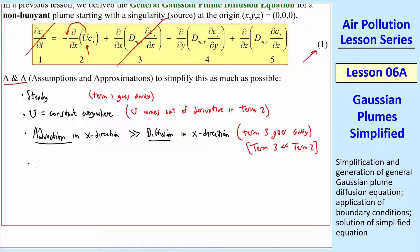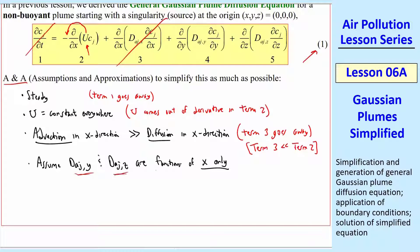We'll make another assumption: the diffusion coefficients D_a,j,y and D_a,j,z are functions of x only. Both remaining diffusion coefficients depend on x, but they do not depend on y or z. So when we look at term 4, which is a derivative with respect to y, D_a,j is only a function of x and can come out of the derivative. Similarly for term 5 in z. So that simplifies terms 4 and 5.